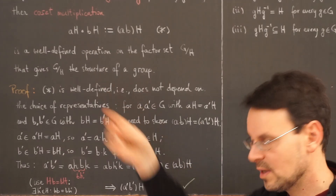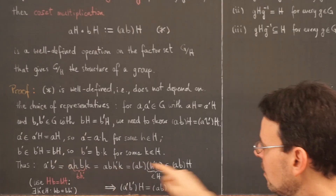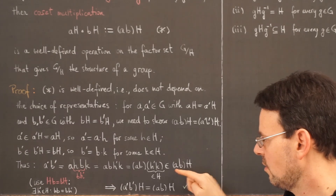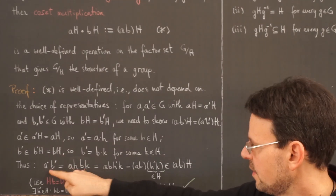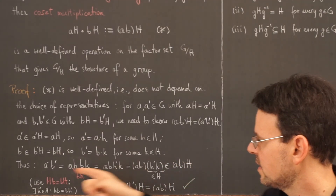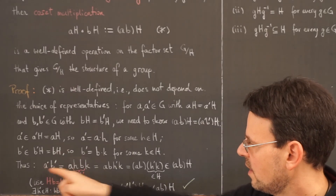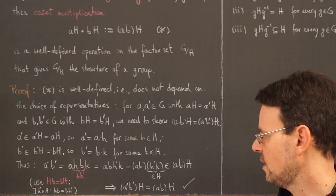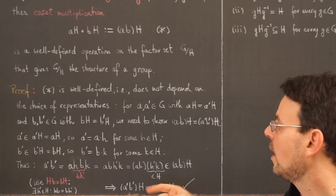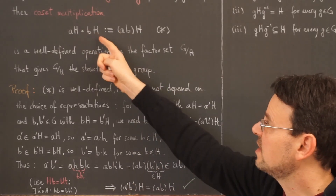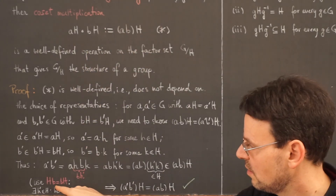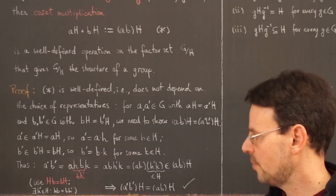Therefore A'·B' is of the form (ab) times an element of capital H, so it lies in the left coset of ab. We proved earlier that if an element lies in a coset, its own coset equals that coset — cosets are equivalence classes. So we end up with exactly what we wanted to show, and we have proven that coset multiplication is indeed a well-defined operation on the factor set.